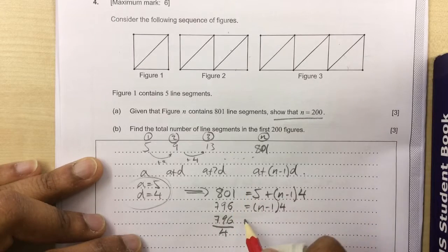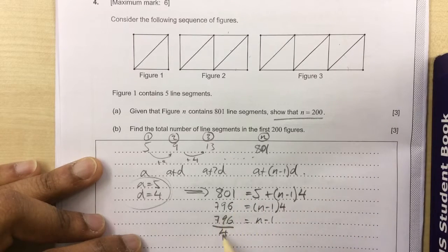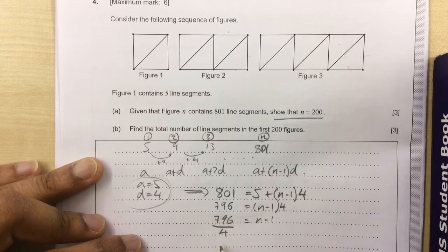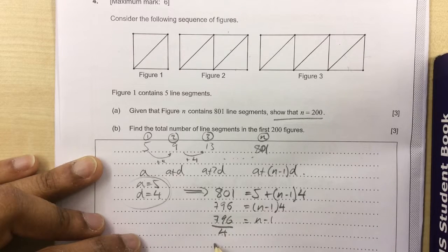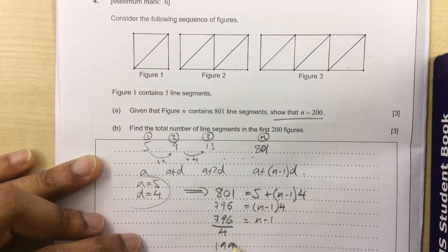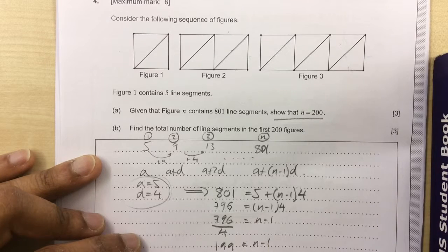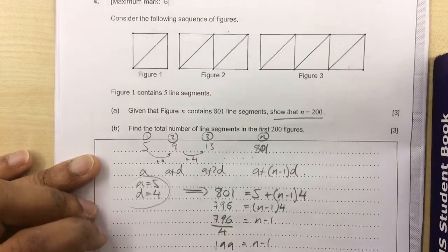That's equal to N minus 1. 800 divided by 4 is 200, so 796 divided by 4 is going to be 199. And therefore, 200 equals N. And that's our answer.